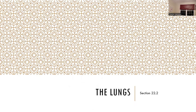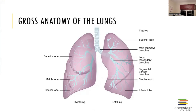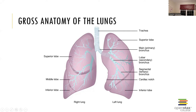Looking at the gross anatomy of the lungs: the right lung has three lobes — the superior, middle, and inferior lobes — while the left lung has two lobes, the superior and inferior lobes. Notably, the left lung possesses a cardiac notch — a curvature that allows the heart to tilt to the left of the midline.